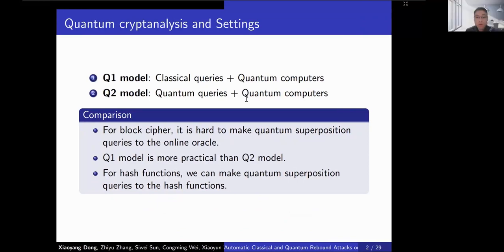On quantum cryptanalysis, we already have two models: Q1 and Q2. In the Q1 model, attackers can make only classical queries and use a quantum computer to perform the attack. In the Q2 model, attackers are allowed to make quantum queries. For block ciphers, Q1 is more practical than Q2, but for hash functions, we are free to make quantum superposition queries.